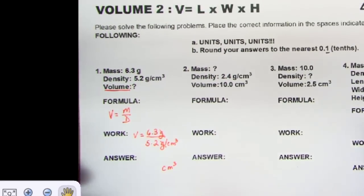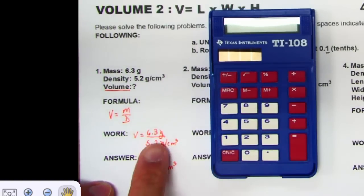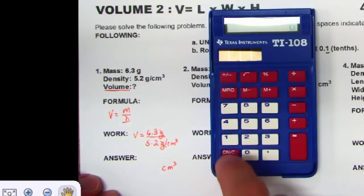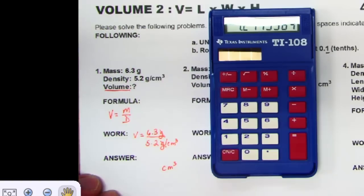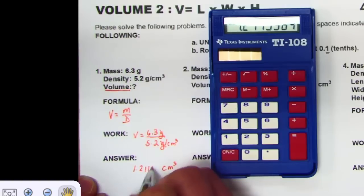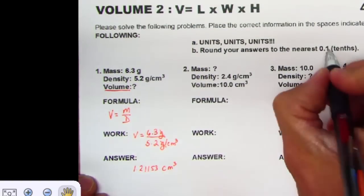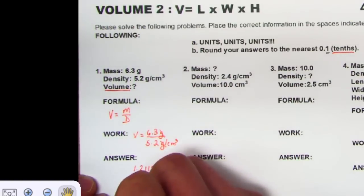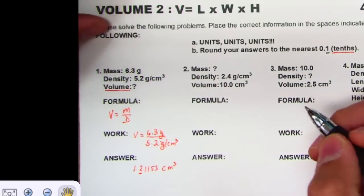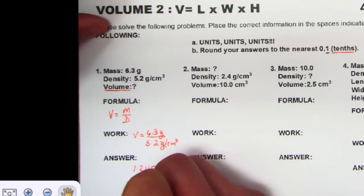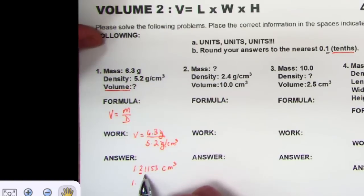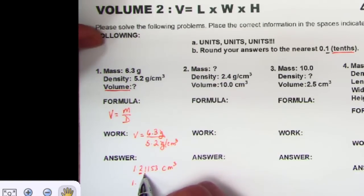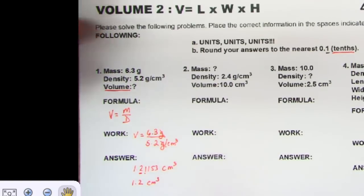The answer comes out to 1.211538 and so on. They want us to round to the tenths place, so we look at the tenths digit and the digit after it. The rounding rule: five and above, round up; four and below, keep the same. Since the digit after the tenths place is less than five, we don't round up, giving us 1.2 cubic centimeters.